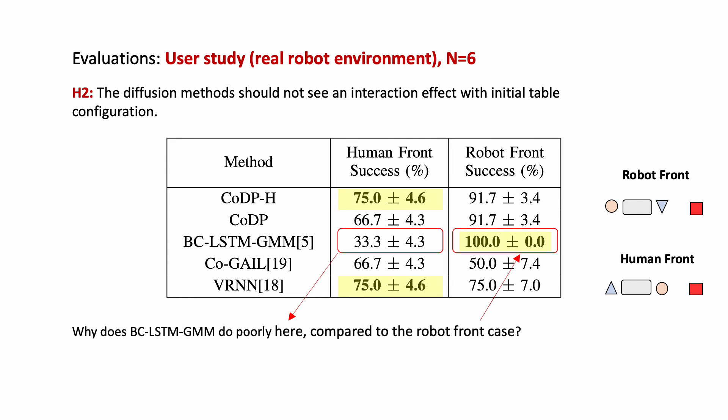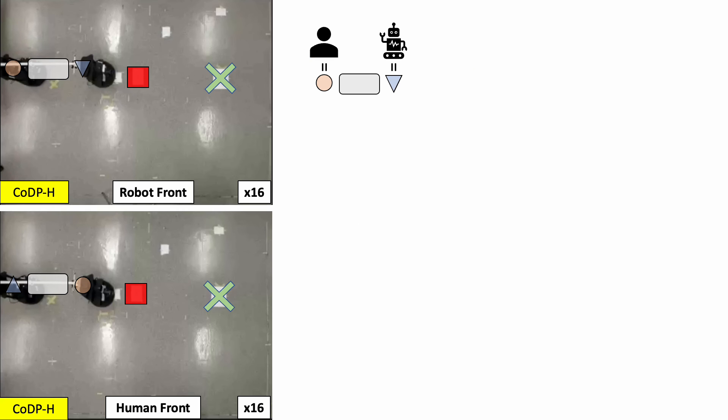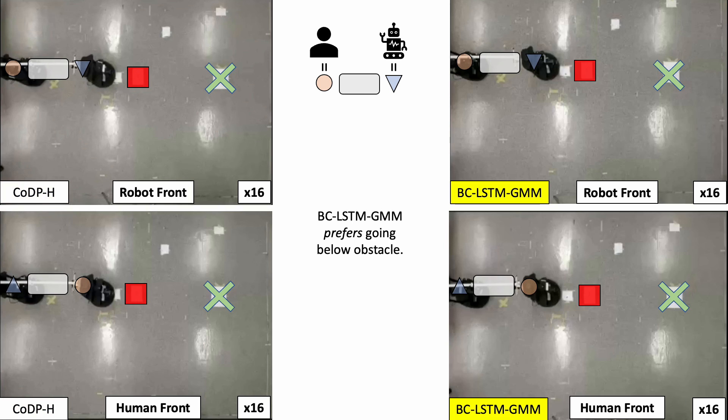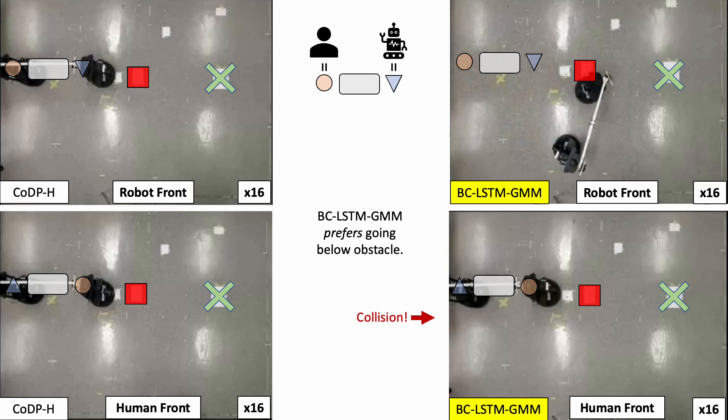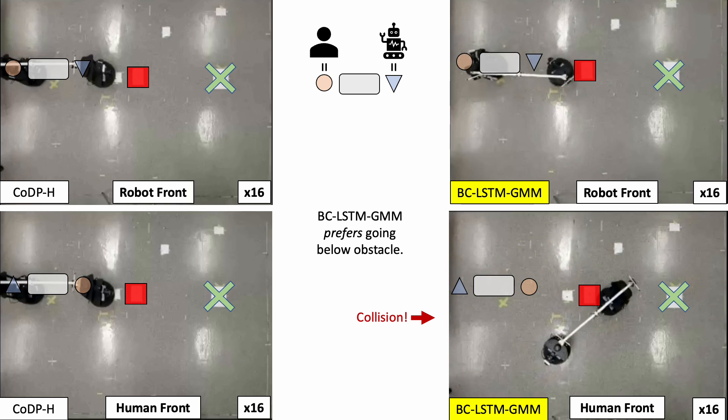We further investigate the varied performance of BCLSTM GMM. Here, we see that CoDPH can work with the human to move both below and above the obstacle. Meanwhile, BCLSTM GMM is affected by the initial configuration and therefore less robust to multimodal outcomes that arise from human-robot interactions.